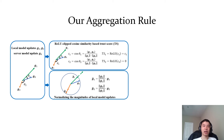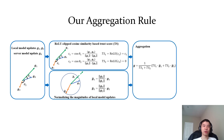Finally, our global model update g is the weighted average of the normalized local model updates, weighted by the clients' trust scores, and we use this g to update the global model.